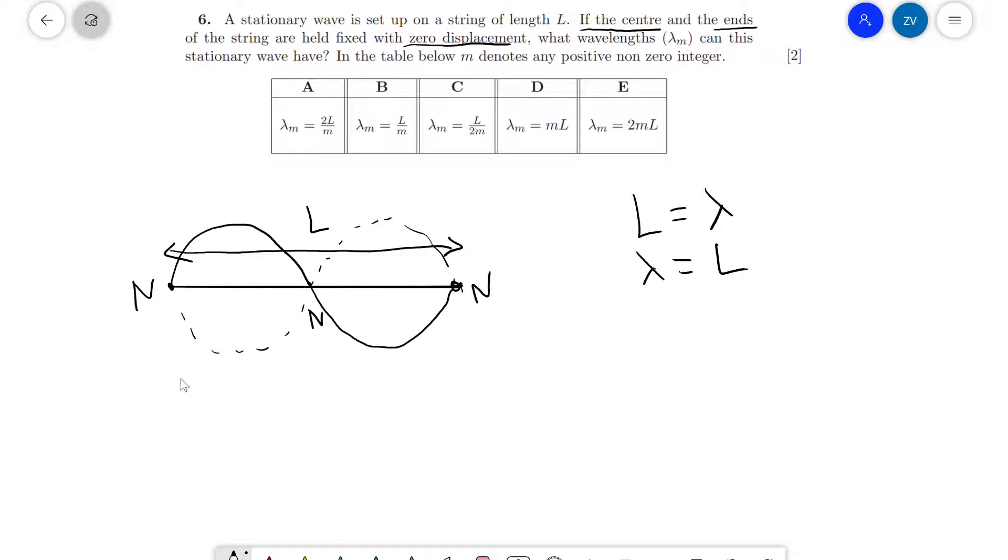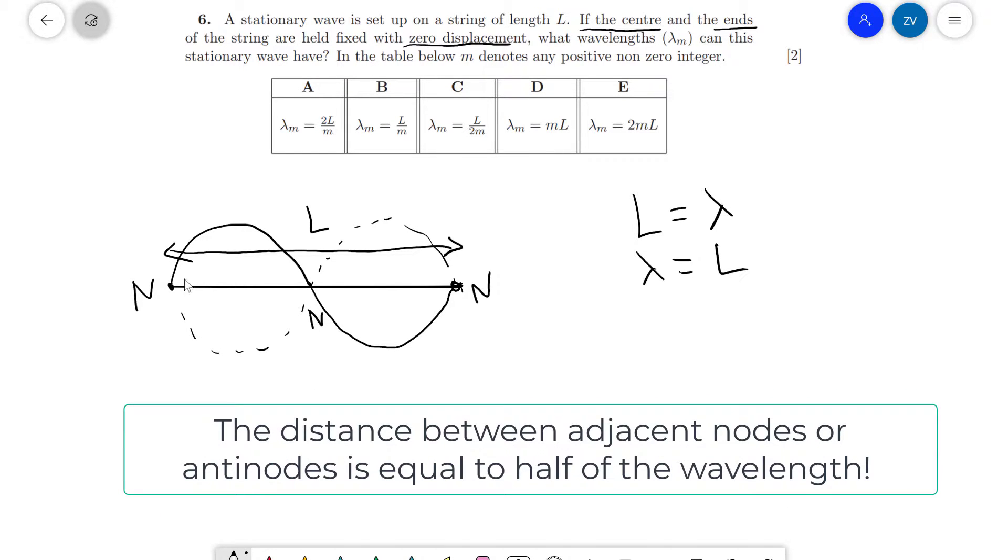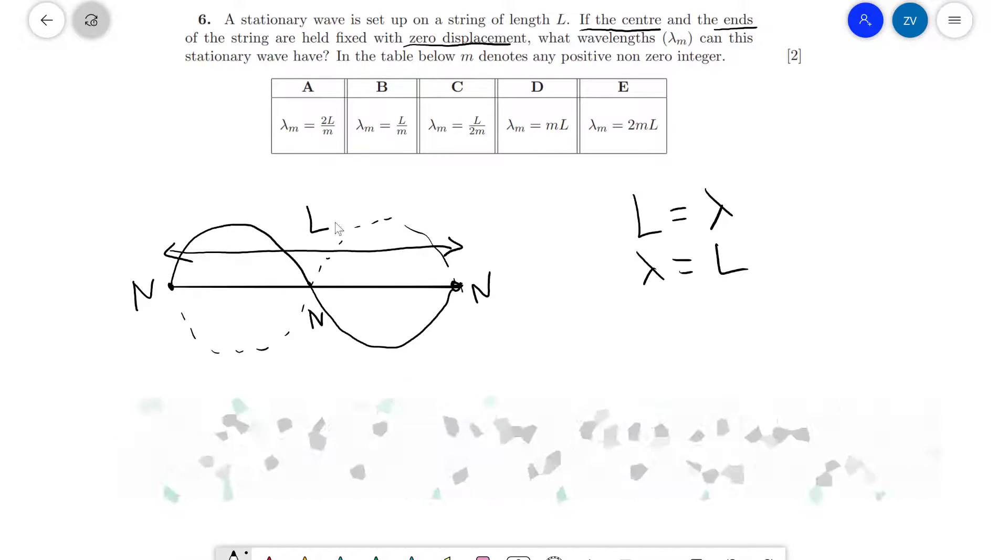As a little side note, because obviously if a question appears once on the PAT, it's unlikely to appear in exactly the same form again. However, one very useful thing I've personally found with stationary waves is that the distance between adjacent nodes—from N to N or adjacent anti-nodes—is always equal to a half. Half of the wavelength. Let me say it again: the distance between adjacent nodes is equal to half of the wavelength.